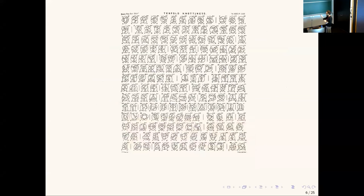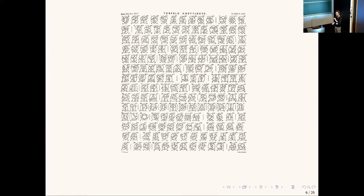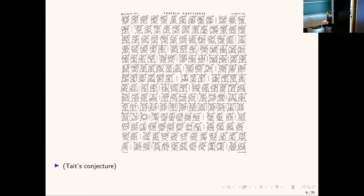Even though the vortex atom theory was eventually debunked, it gave Tate the idea to start knot tabulation — he wanted to create a periodic table of knots, since if atoms are made of knots, you should keep track of all possible knot configurations. He began drawing knots, and one page shows alternating knots with ten crossings, going back to around 1885. Remarkably, he drew them all by intuition with no mistakes — the same table we use today. There should be 123 such knots.